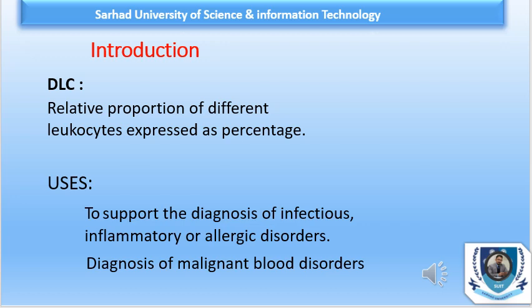The importance of DLC is that it is used to support the diagnosis of infections. For example, in bacterial infection or viral infection, we can identify neutrophilia or lymphocytosis. In allergic conditions, we may see a high eosinophil count, indicating eosinophilia. For malignant blood disorders, when performing DLC and finding more than 30% blasts, we can think about leukemias — whether lymphocytic leukemia or myeloid leukemia.